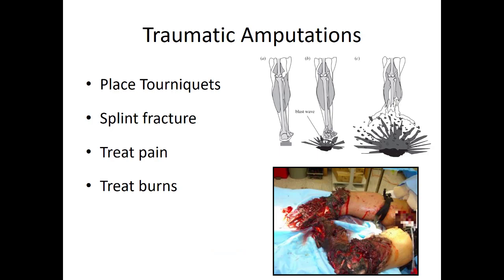Traumatic amputations are also not uncommon in blast injuries. Many blasts are initiated by a pressure trigger like a mine or IED, and if someone steps on one, the blast goes up through the heel, shredding through bone, muscle, and vasculature. Depending on the size of the blast, it can extend all the way up into the groin and abdomen. Treat it like any traumatic amputation: place tourniquets and control hemorrhage as fast as possible, splint any fractures to control pain and facilitate movement, treat pain, and address any associated burns.